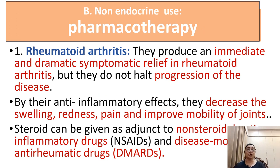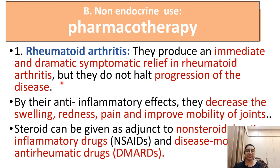Non-endocrinal uses include rheumatoid arthritis, where pain and inflammation can be reduced with immediate and dramatic symptomatic relief. However, it does not halt the progress of the disease. The anti-inflammatory effect decreases swelling, redness, pain, and improves joint mobility. It can be given with non-steroidal anti-inflammatory drugs as well as disease-modifying anti-rheumatic drugs.